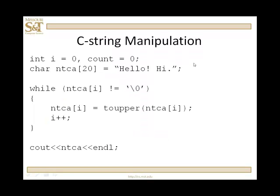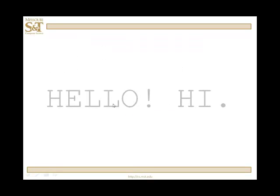One more time with the same null terminated character array 'hello, hi'. We walk down that array in the while loop and call the toupper function on ntca[i], assigning to each individual character toupper of that character. So it's going to take 'hello, hi' and turn it into 'HELLO, HI' — all uppercase.